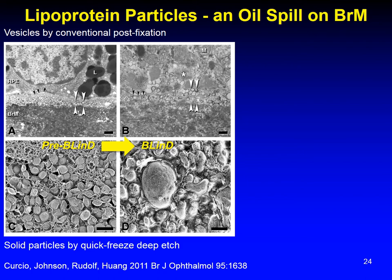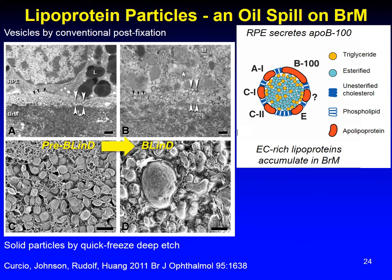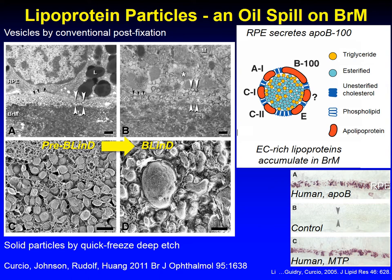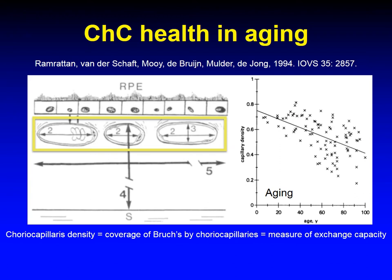The esterified cholesterol implies that lipoproteins are the source. This age effect caught our attention because lipids in Bruch's membrane was a direct way to get from physiology to drusen while also linking to well-studied mechanisms, molecules, and clinical success in atherosclerotic cardiovascular disease. In human eyes prepared by quick-freeze deep etch, we can see a dense collection of lipoprotein particles in aged Bruch's membrane that form pre-basal linear deposit. These particles accumulate over adulthood, especially in the macula, and they fuse and pool to form basal linear deposit in AMD.